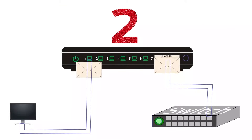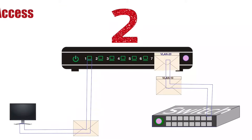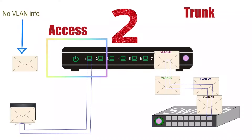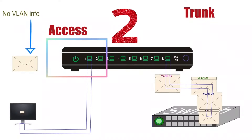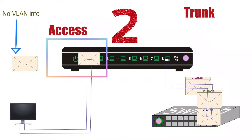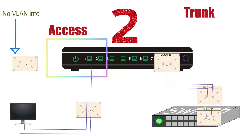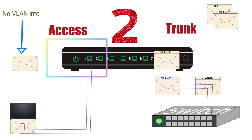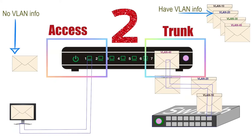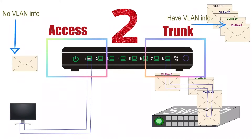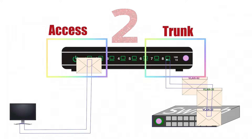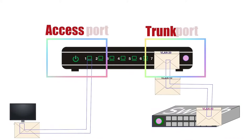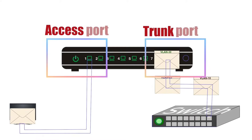A switch port can work in two modes: access mode and trunk mode. In access mode, it removes VLAN information from all frames before forwarding them. In trunk mode, it keeps VLAN information. Based on the mode it works in, it is known as either an access port or a trunk port.